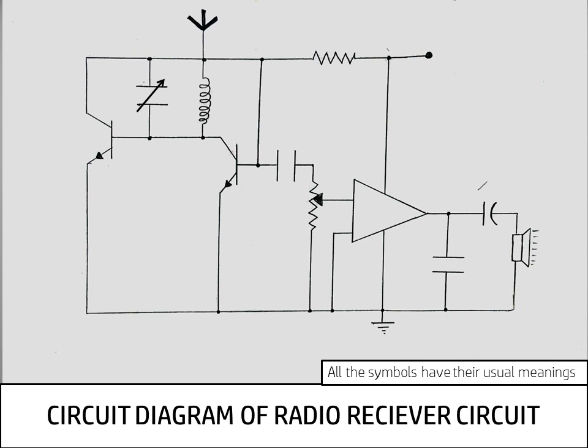So now we are looking at the circuit diagram of this radio receiver circuit. So look at the antenna. It receives the frequency as I have already mentioned.